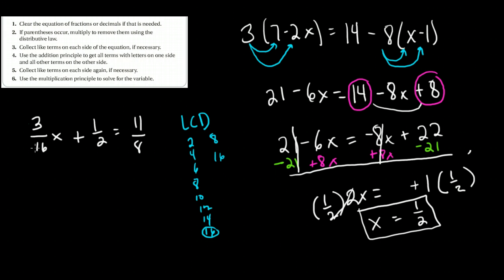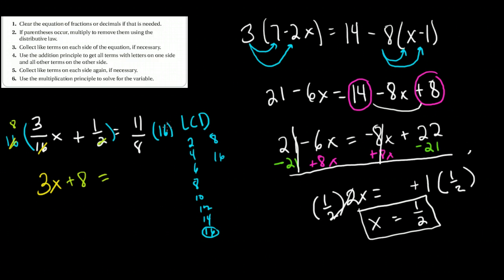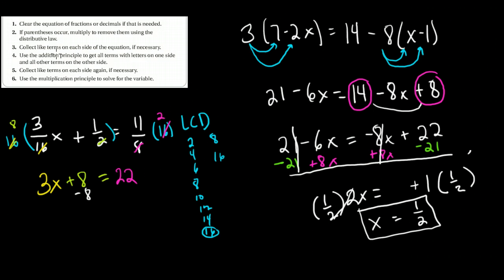Now I want to multiply both sides of this equation by 16. The 16 divides out with the 16 in the denominator of 3/16, giving me 3x. The 16 divides with the 2, leaving 8, so 8 times 1 is positive 8 — giving 3x plus 8. On the right side, the 16 divides out with the 8 two times, so 2 times 11 is 22. That cleared the parentheses and there are no like terms, so now I'll use the addition principle.